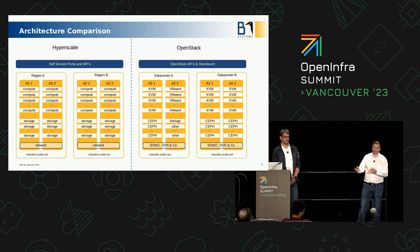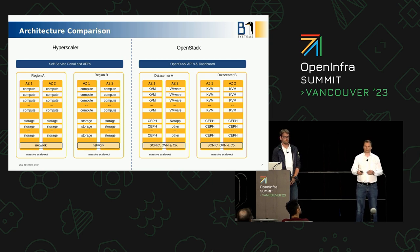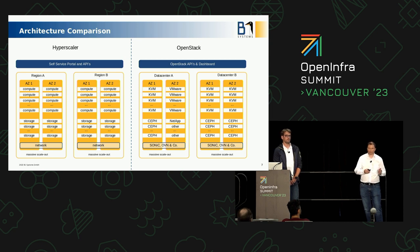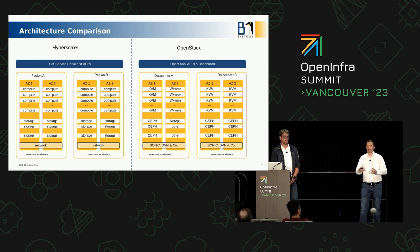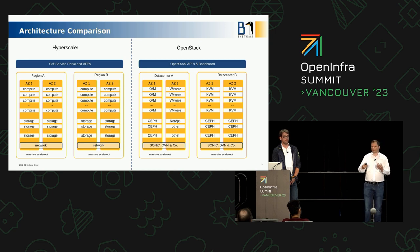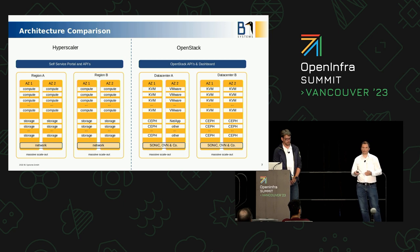This versatility creates challenges, which Michel will talk about later when we try to puzzle everything together for our customers. We also see customers who first went into the hyperscalers and now, because of data protection or because the promises from the hyperscalers weren't fulfilled, are building their own private cloud deployments in their own data centers. Some of these customers are also coming from VMware and want to move to open-source software, and OpenStack is a very good start for that.